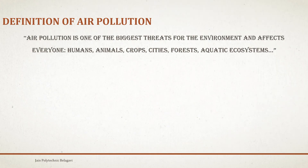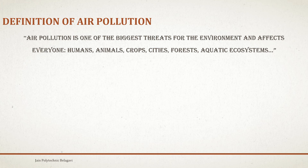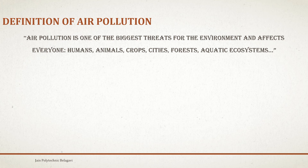First we will discuss the definition of air pollution. Air pollution is one of the biggest threats for the environment and affects everyone — humans, animals, crops, cities, forests, and aquatic ecosystems. By this we understand that air is one of the most important things in the ecosystem.